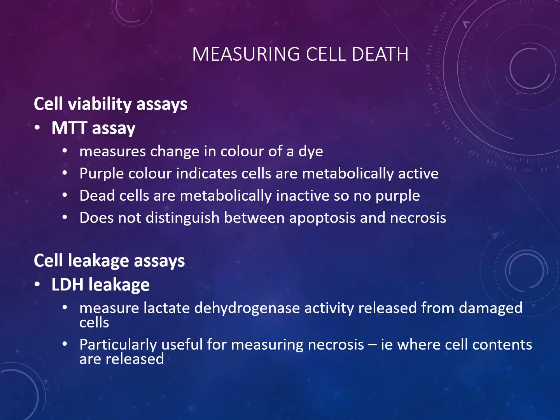For measuring cell death, you can use cell viability assays such as the MTT assay, which measures change in color of a dye. A purple color indicates cells are metabolically active; dead cells are metabolically inactive and so are not purple. This does not distinguish between apoptosis and necrosis. You can also use cell leakage assays — lactate dehydrogenase (LDH) activity can be measured, which is released from damaged cells. This is particularly useful for measuring necrosis.